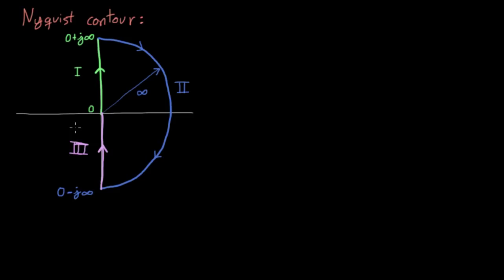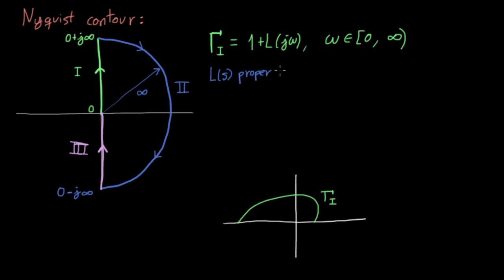Now we have to find the images of the contour, which isn't as difficult as it may seem. Let's see, the images of the first part of the contour are given by 1 plus L with omega belonging to the interval 0 infinity. This is just 1 plus the open-loop frequency response, which we have assumed to know, so we can draw it in the plane.